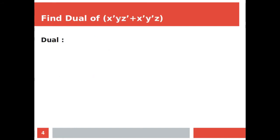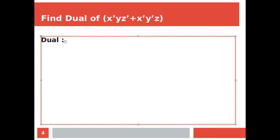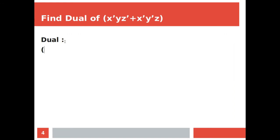Let's find the dual of: X' · Y · Z' + X' · Y' · Z. So here, X complement remains, the product sign between X complement and Y gets converted to plus, then product again converts to plus giving Z complement, and the plus converts to product, then X complement plus Y complement plus Z.